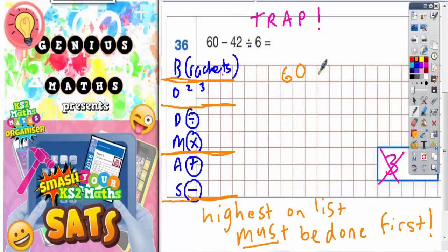So what you've got to actually do is this. Divide has got to be done first. You're going to cross out the divide and work that out. 42 divided by 6 is 7. Write your answer directly underneath. What you've not done, you just need to drop it down. So I've not done the 60, so drop that down. And I've not done the subtract, drop that down.